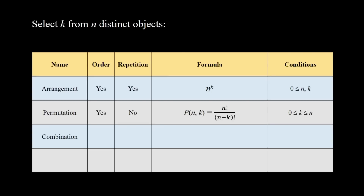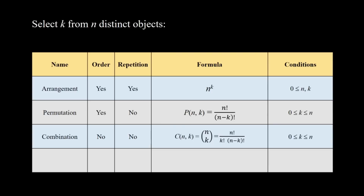The third is combination: order is not important and repetition is not allowed. The formula is n factorial over k factorial times n minus k factorial, denoted n choose k or C(n,k), with condition 0 ≤ k ≤ n. The fourth is combination with repetition: order is not important but repetition is allowed. The formula is n plus k minus 1 choose k, which equals n plus k minus 1 factorial over k factorial times n minus 1 factorial, with condition 0 ≤ n and k.